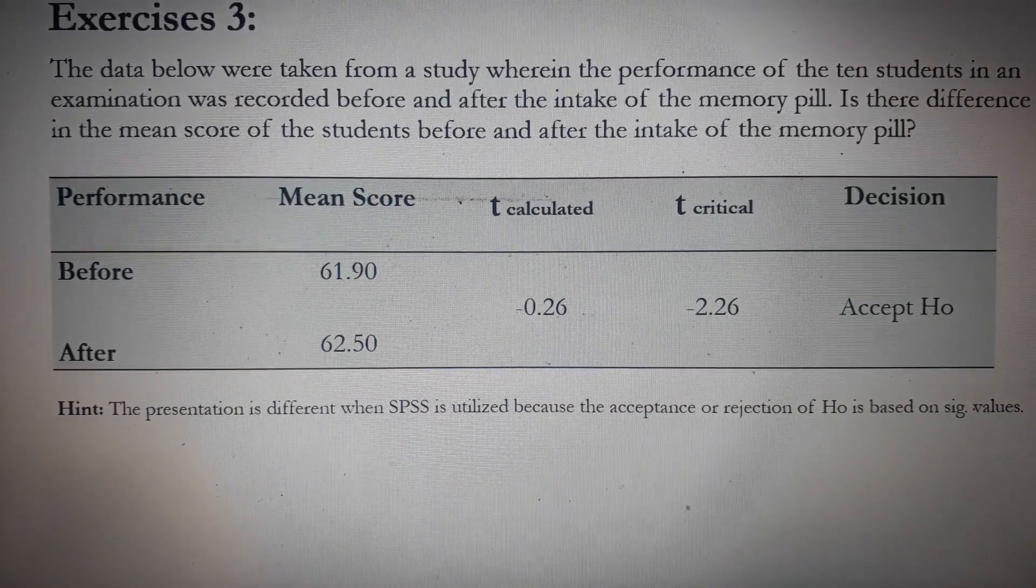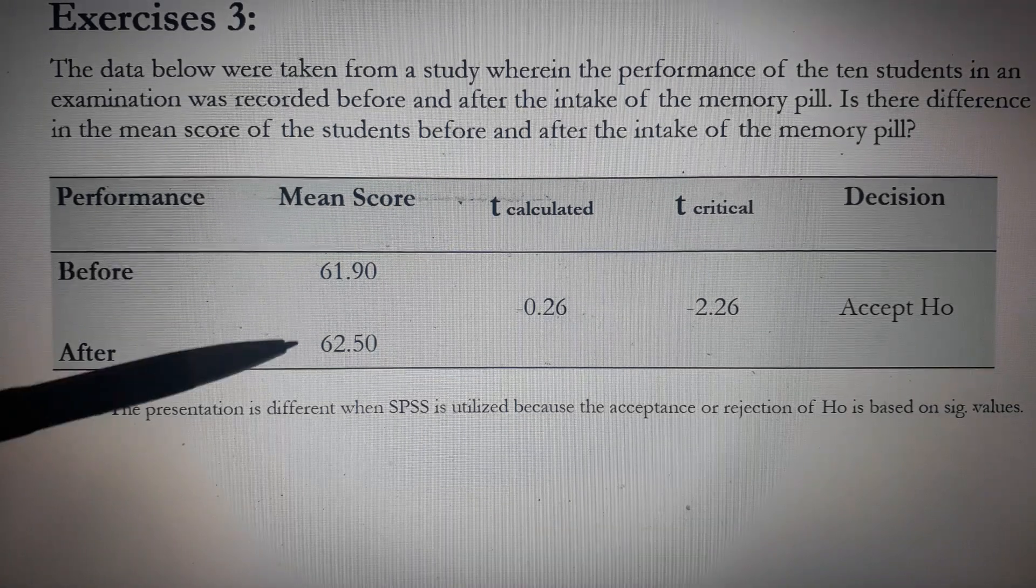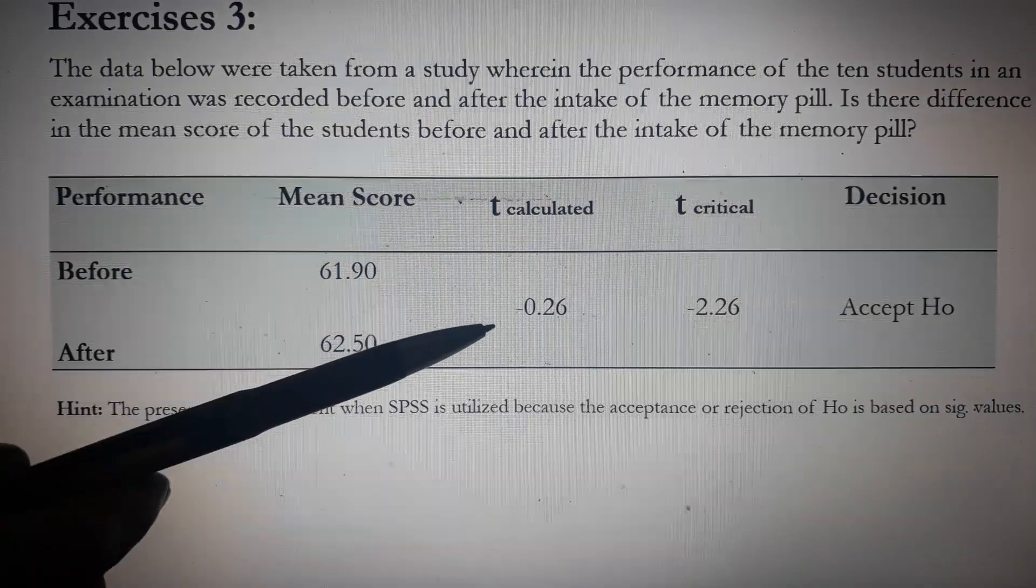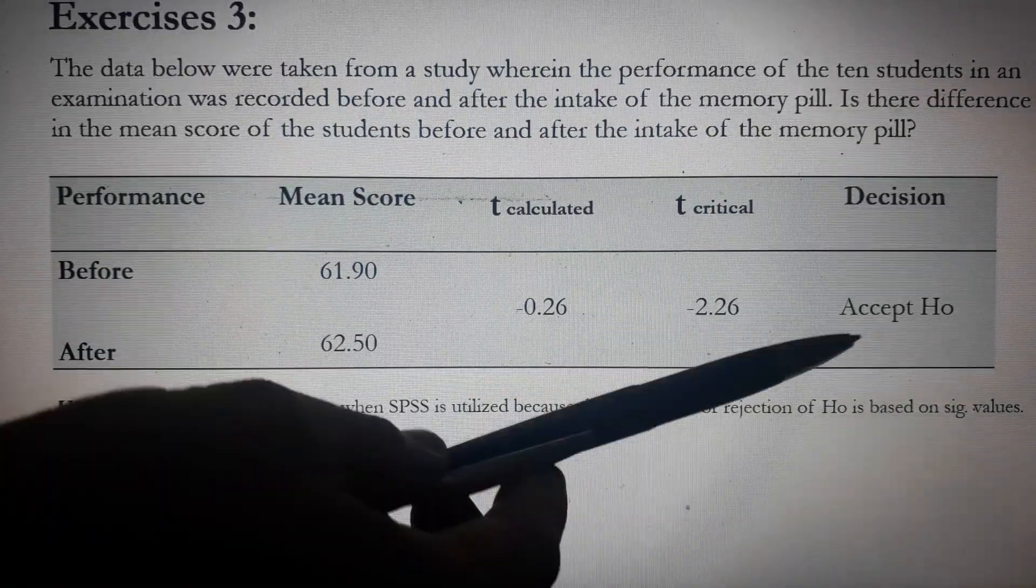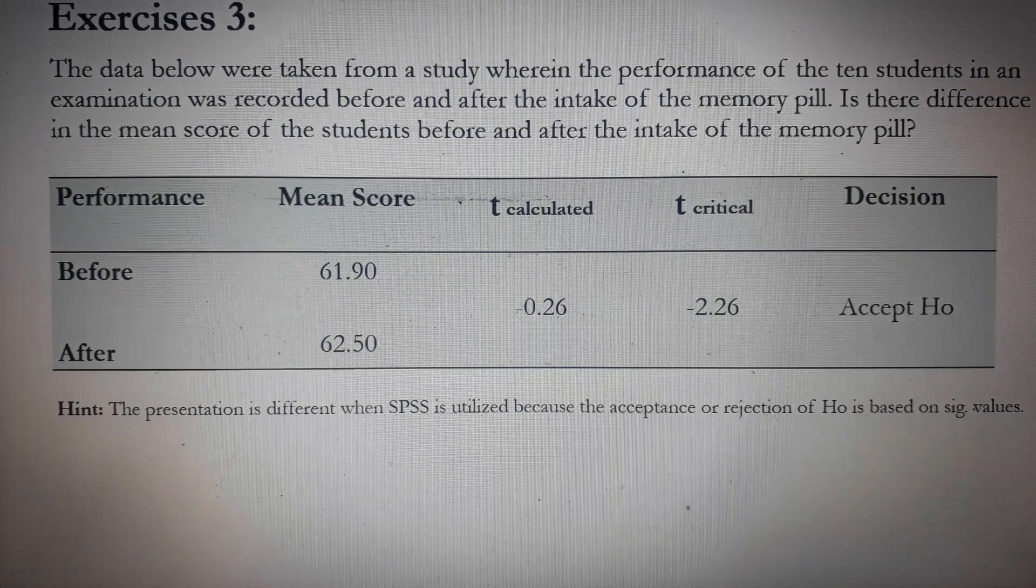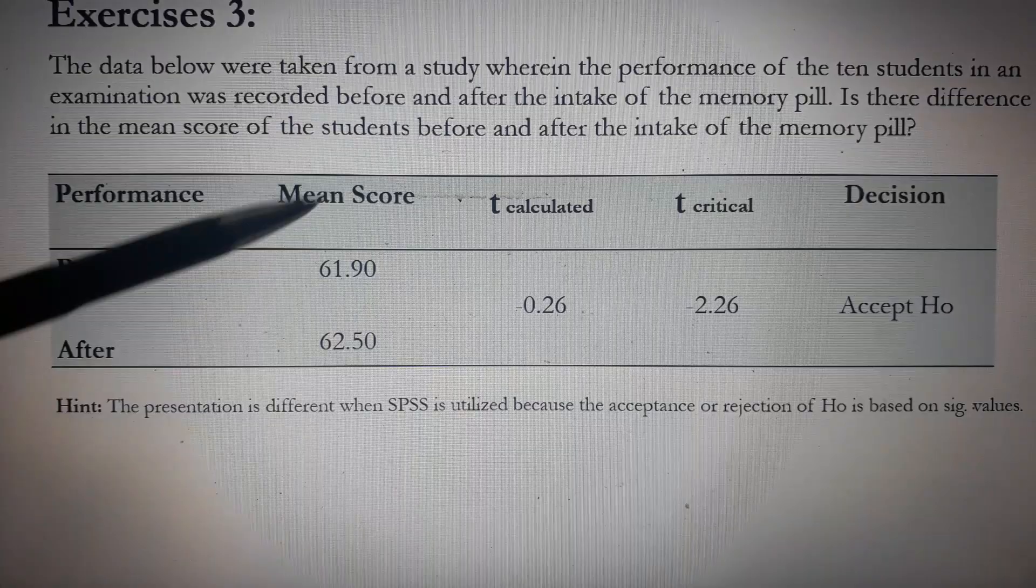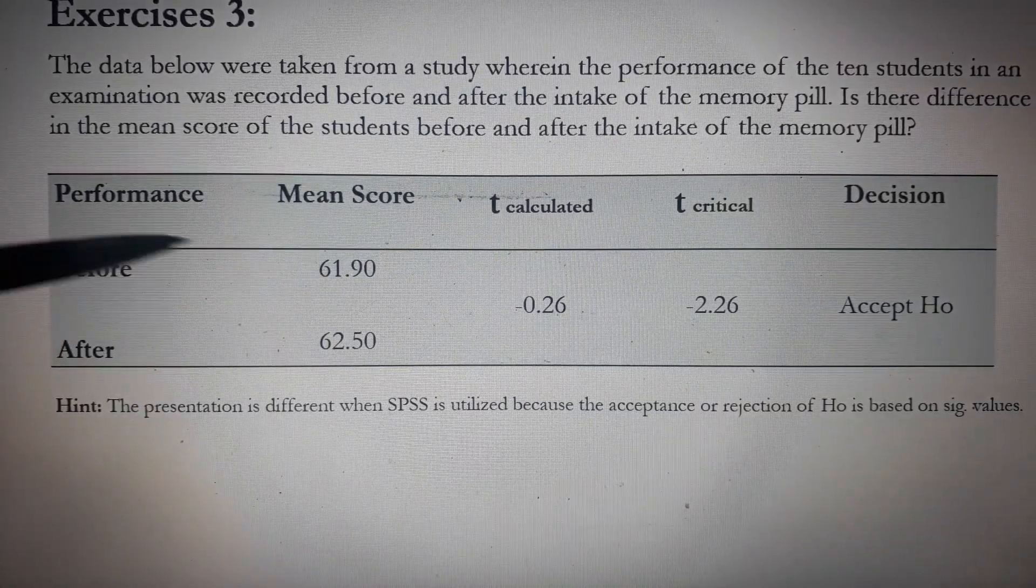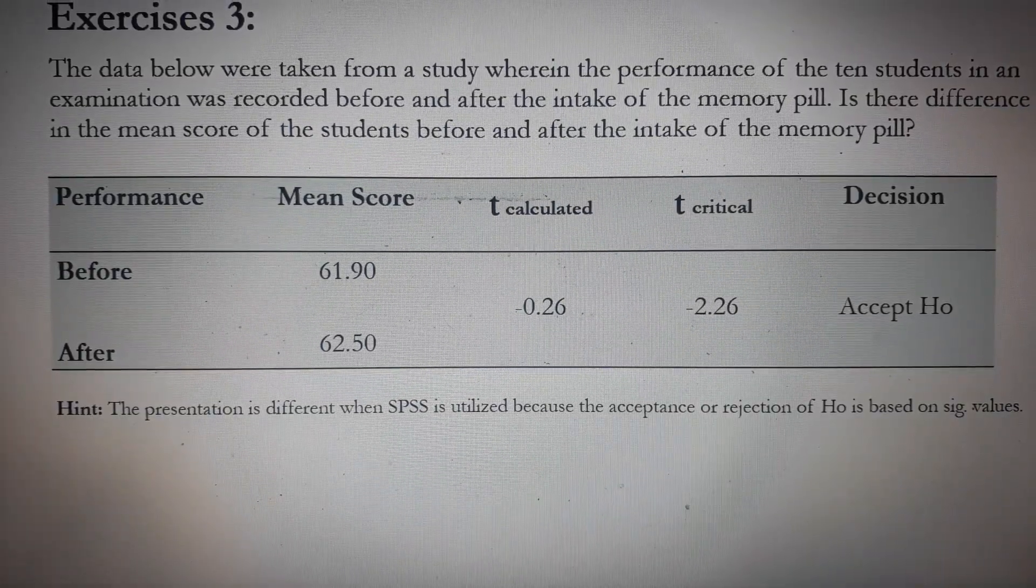How do we present our result? This is how we present the result. We have the performance before and after the intake of the memory pill, the mean score, and then the calculated T of negative 0.26, the T critical, which is negative 2.261, and the decision is to accept the null hypothesis. Again, the presentation is different when SPSS is utilized because the acceptance or rejection of HO is based on SIG values. These mean scores are actually the average scores before the intake, and this is the average score after the intake. You simply add all the scores and divide by the number of cases.